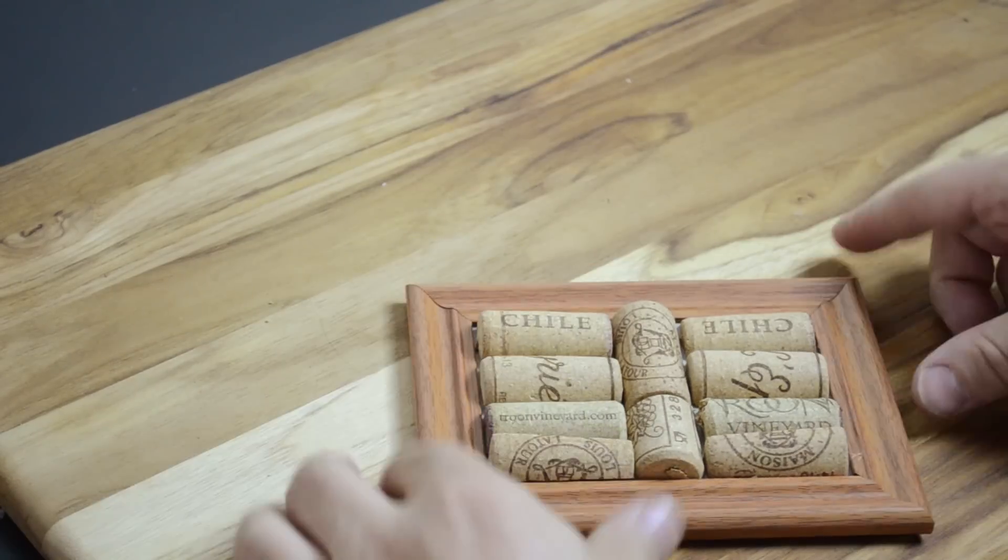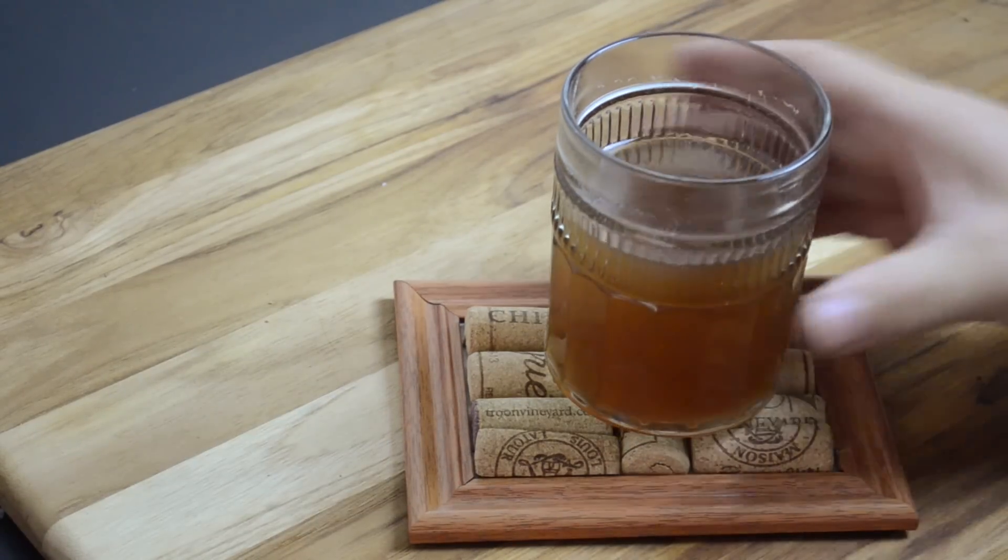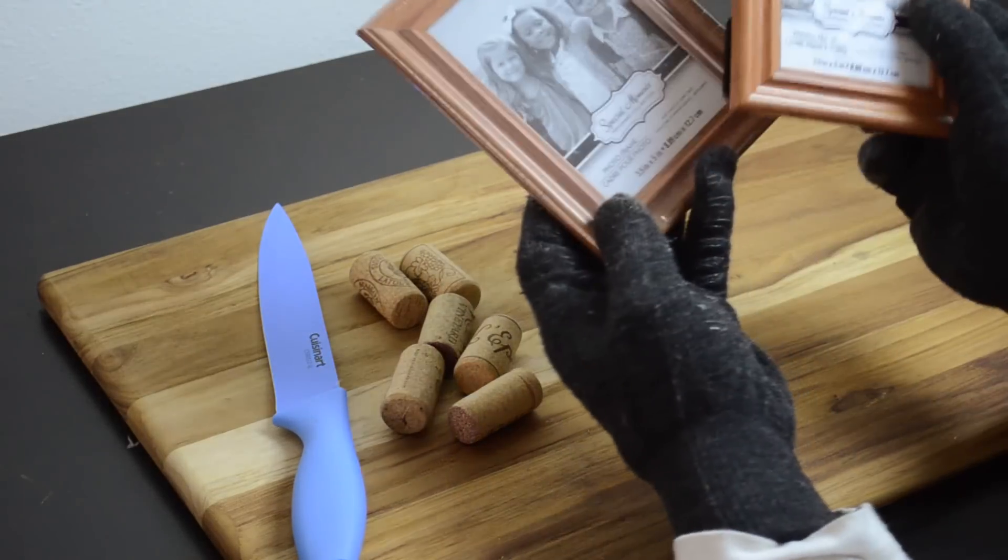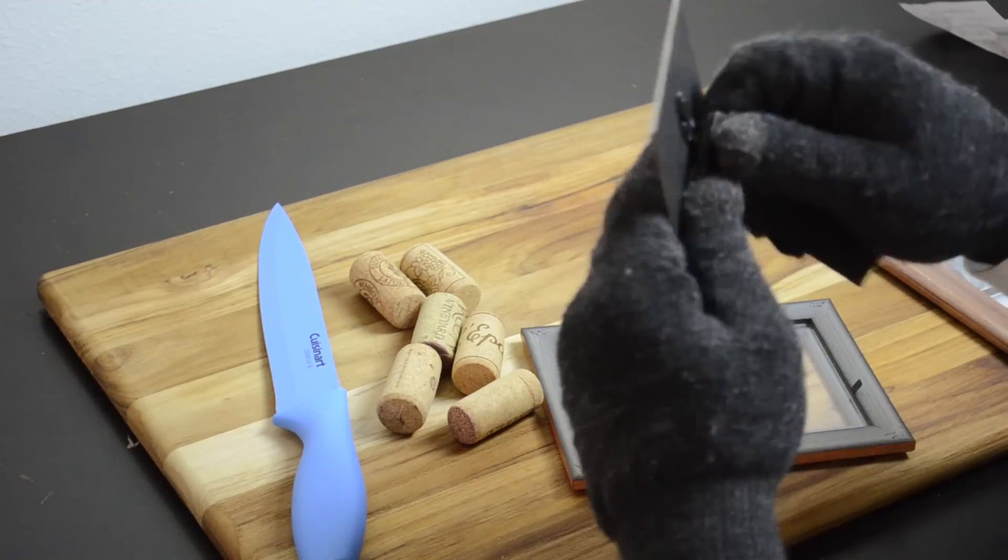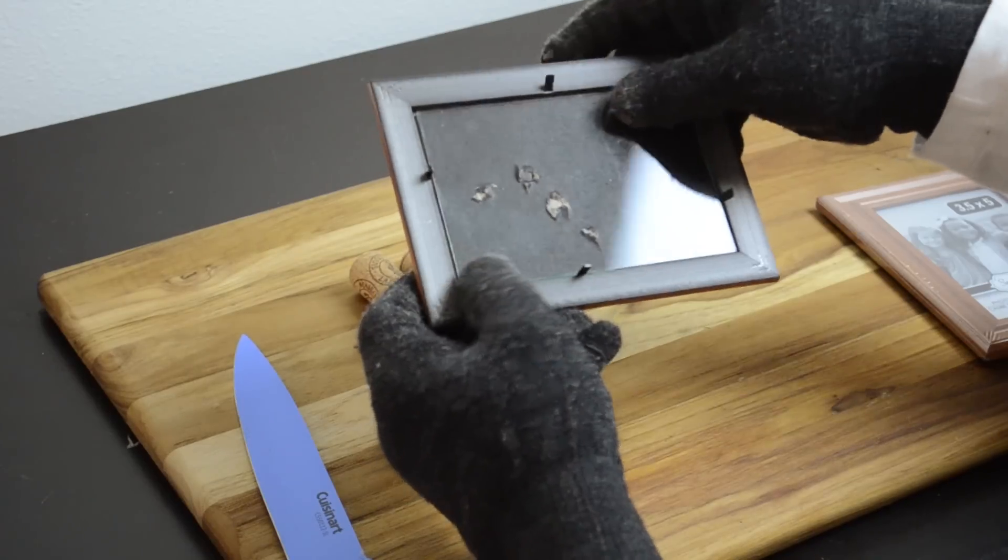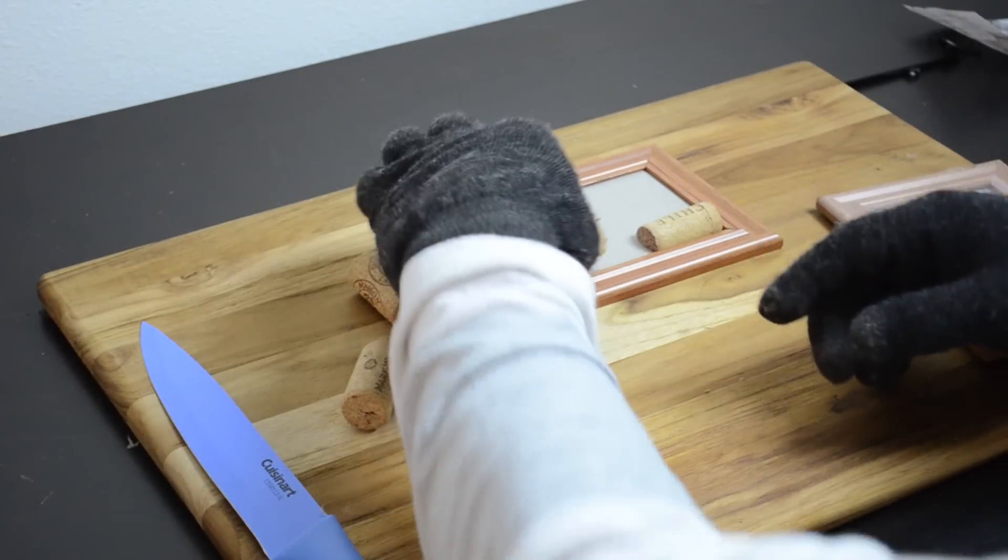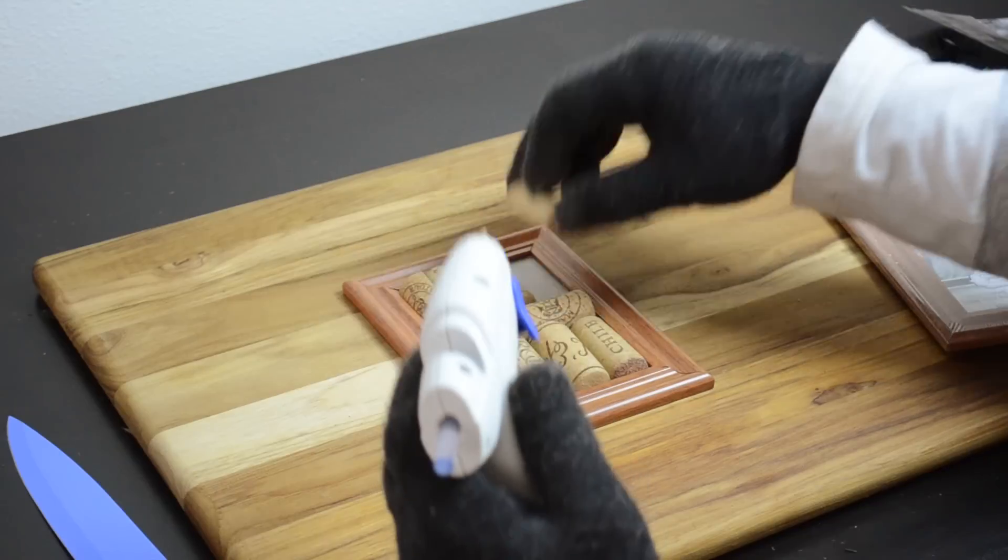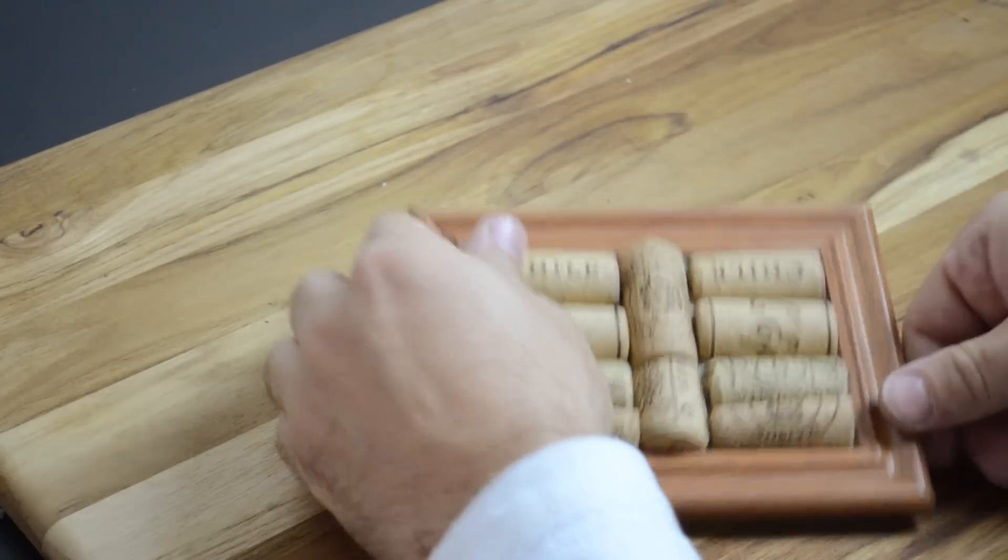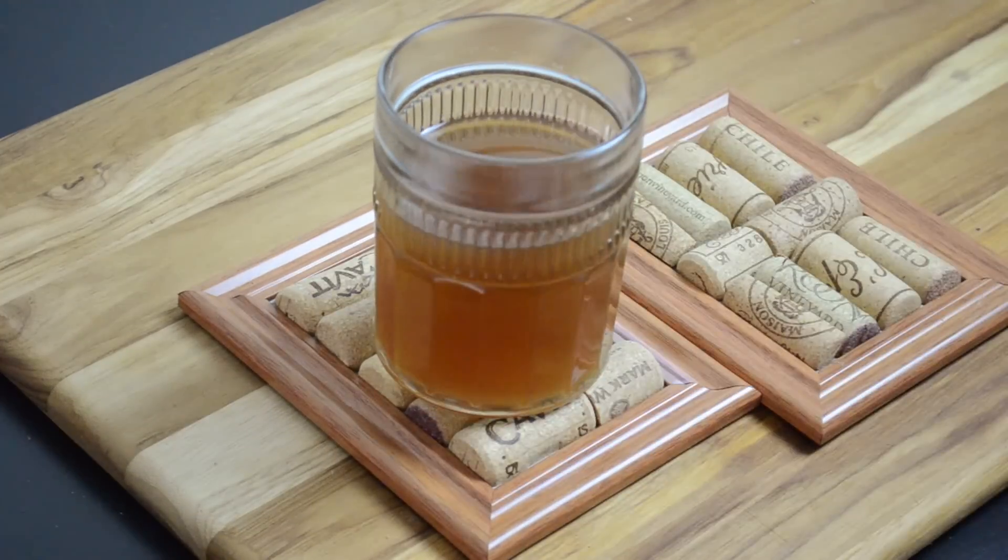Tired of boring coasters for your drinks? Why not get all artisanal at the dollar store? Head over and pick up some one dollar picture frames. Slice and dice your corks to fit your desired pattern. We went with a standard three and a half by five inch frame and covered it with carefully sliced cork. After applying hot glue, we had ourselves a nice and unique drink coaster. Give this a shot.